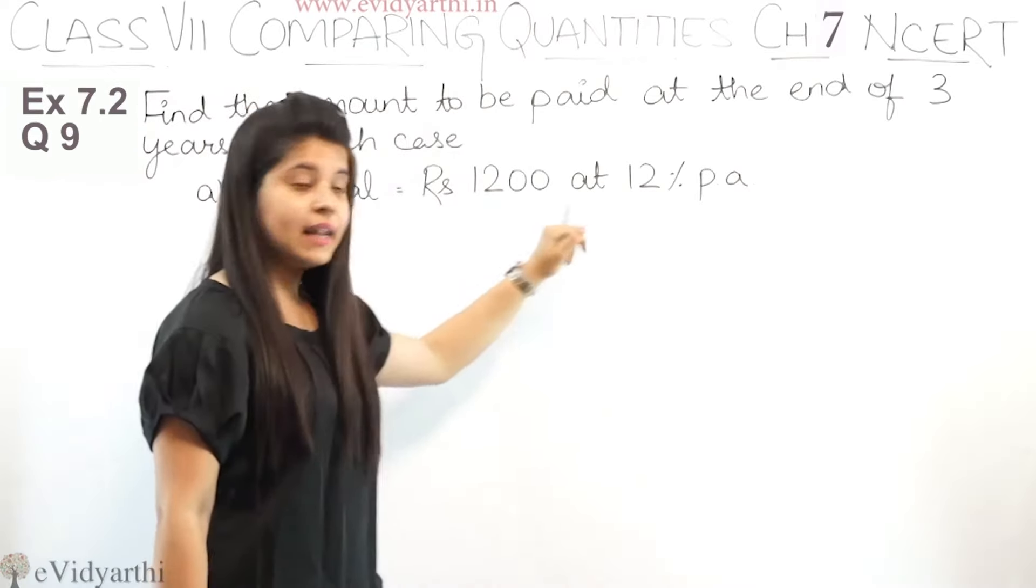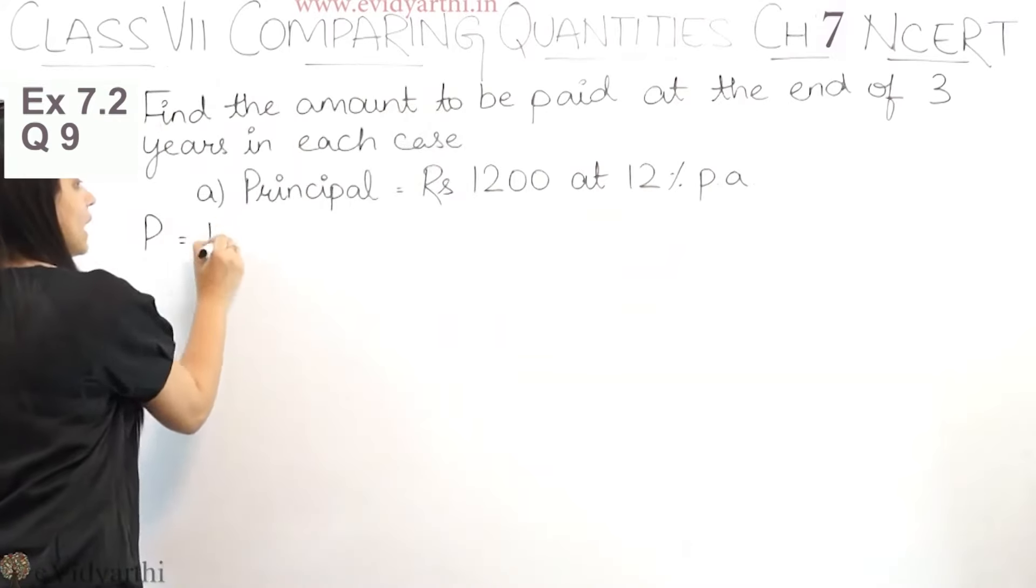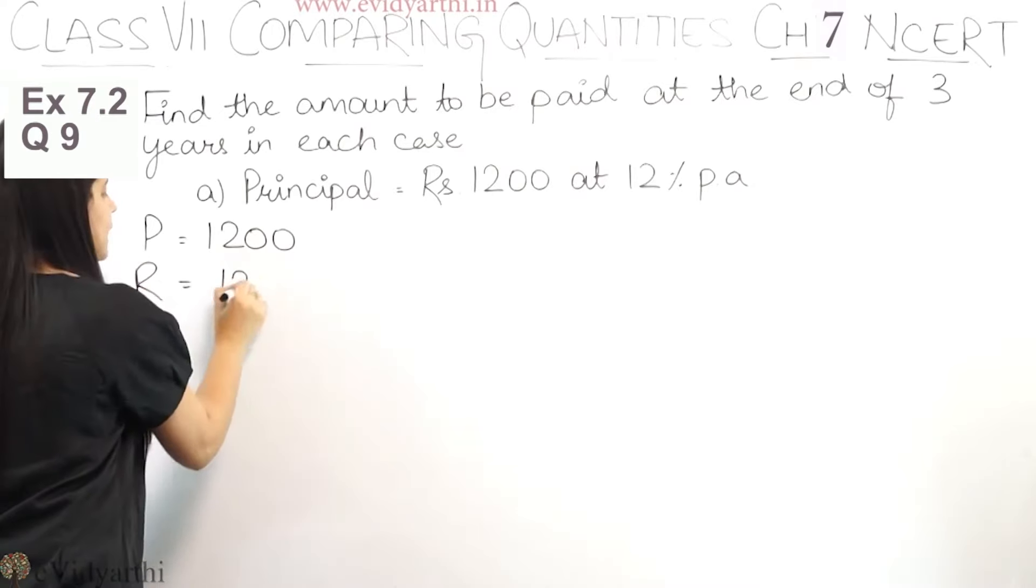The principal is given and the rate is given. So P is 1200, rate is 12%, and time is 3 years.